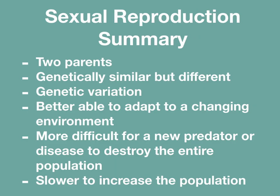So in summary, sexual reproduction requires two parents. The offspring are genetically similar but different. There is genetic variation, and they are better able to adapt to a change in environment. It is more difficult for a new predator or disease to destroy the entire population, but it is slower to increase the population.